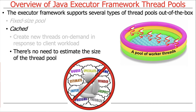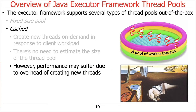One nice thing about the cached thread pool is there's no need to estimate the size of the pool — it expands and contracts automatically. However, the downside is that a big burst of requests could cause performance overhead from creating many new threads all at once. In that case, you're not much different from creating a thread per client request, though at least those threads will be reused for some period of time afterward.